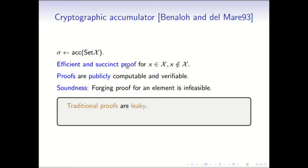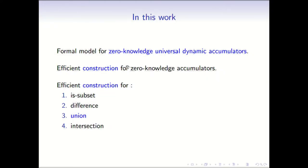The security property traditionally considered is soundness: forging a proof for an element is infeasible, so if an element is present a server cannot prove it is not, and vice versa. Our main contribution is first formally modeling what it means for a zero-knowledge universal dynamic accumulator — adding a privacy property so that proofs of membership and non-membership leak no information beyond the answer. We then give efficient constructions for zero-knowledge accumulators and extend this to the entire set algebra, focusing on union in this talk.